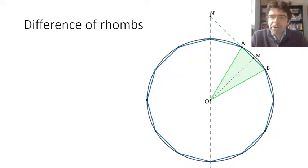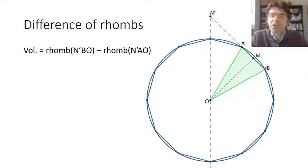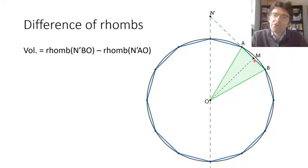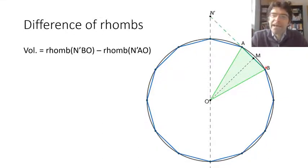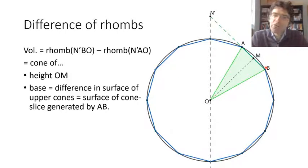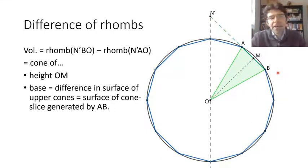What about when we revolve the green triangle? This is the difference between two rhombs, so we can apply what we just saw to equate its volume with a difference between two cones. Both of them have the same height, equal to OM — M is now the midpoint of AB. The bases are going to be equal to the surface areas of the upper cone in each of the two rhombs. So the difference is going to equal a cone with the same height OM, where the base is equal in area to the slice of a cone generated by revolving side AB around the axis. Again, the volume of the green shape equals that of a cone of the set height, where the base equals the shape's upper outer surface.